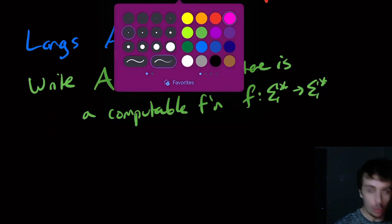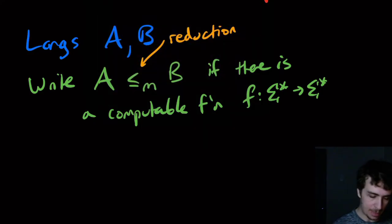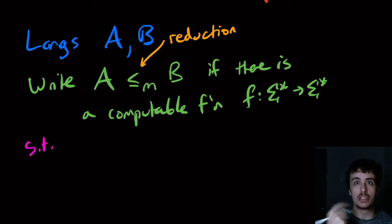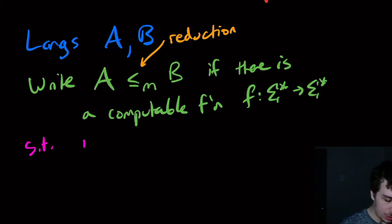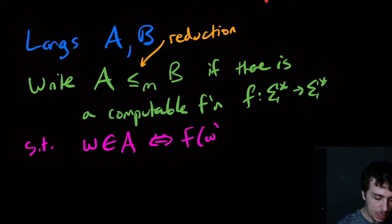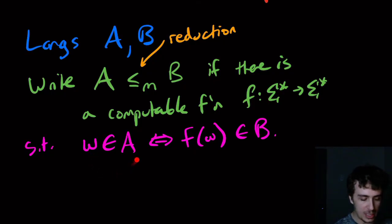But there is a certain relationship between A and B, such that if there's a function f where the following property holds: that w in A, where w is just some arbitrary string, if and only if f(w) is in B. In this sense, the answer of whether the string w is in A is exactly the same thing as whether the produced value, the computed value, is in B.